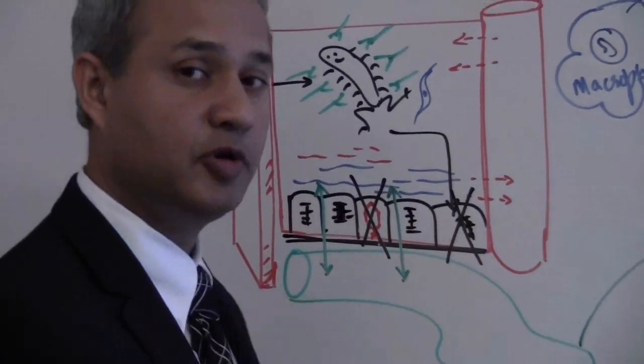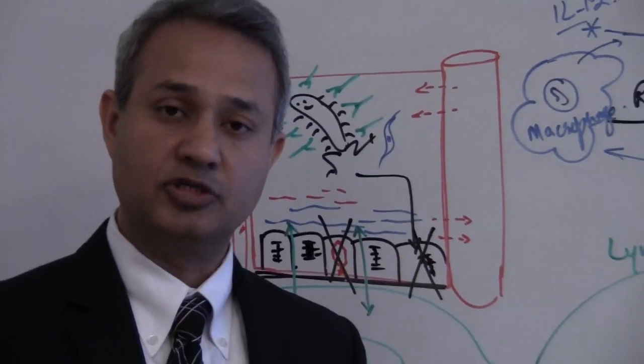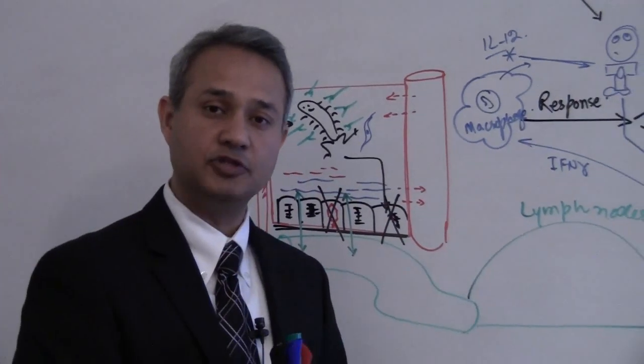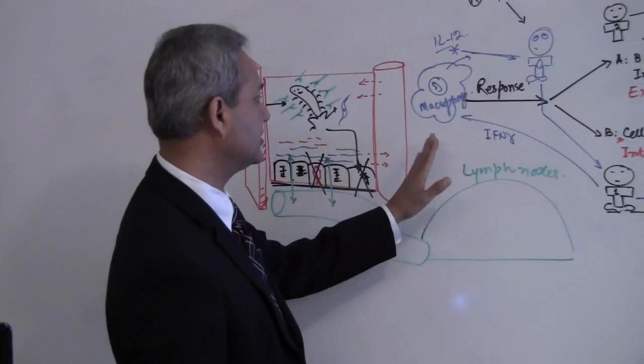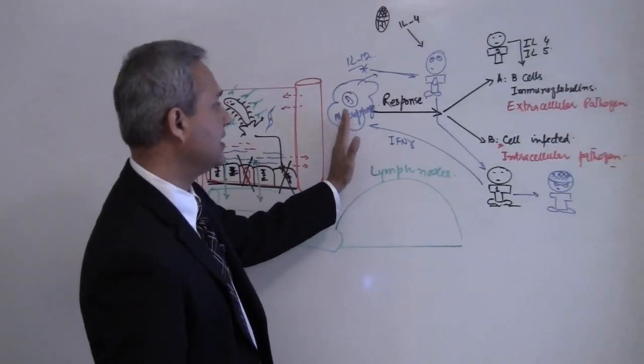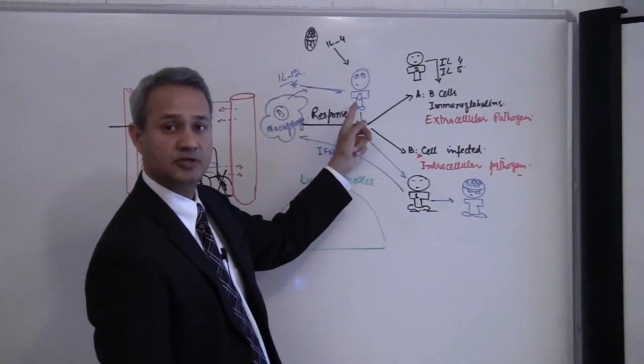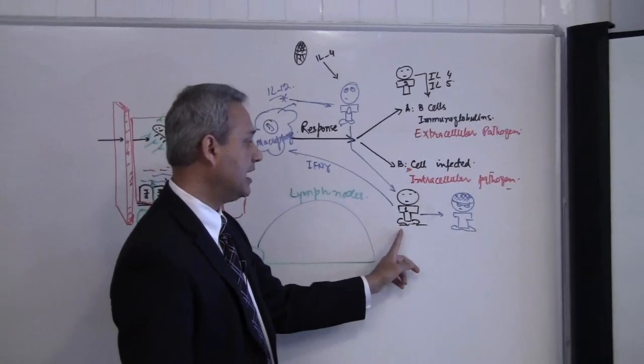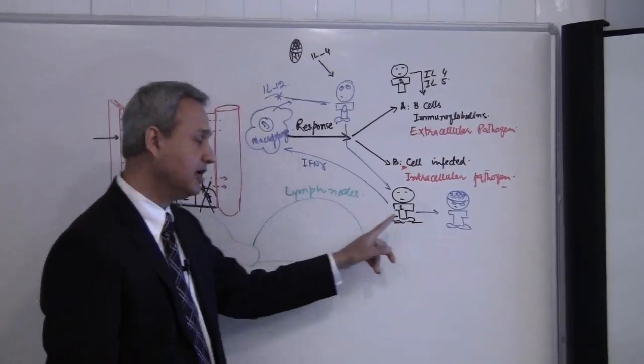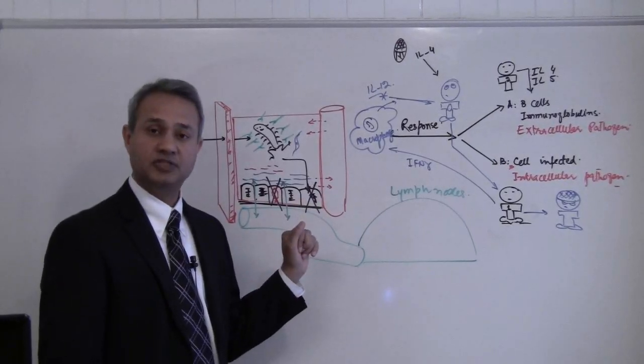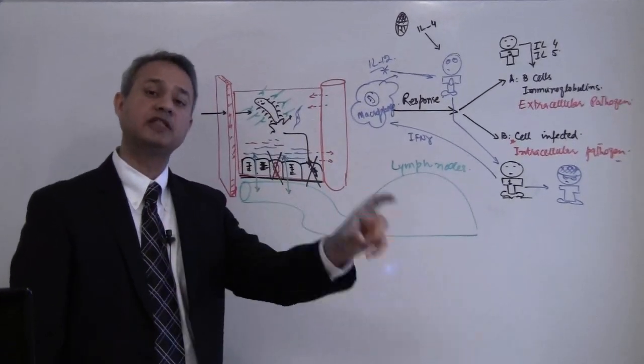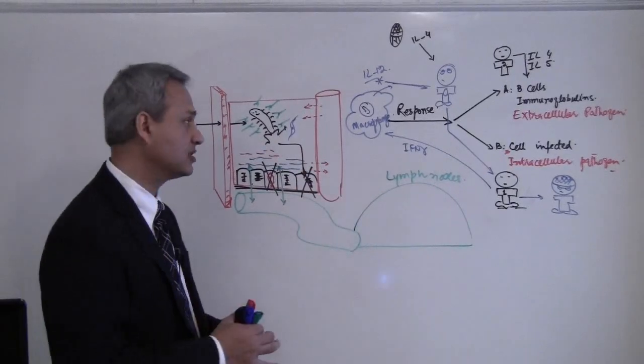So what kind of immune response should we mount? What kind of attack should we do? We should mount the intracellular response. What is that intracellular response? That is IL-12 taking the helper 0 cell to helper 1. Helper 1 would then cause cytotoxic T cells to become active. Cytotoxic T cells would then go and kill these cells. That should be the response. That is the right response.